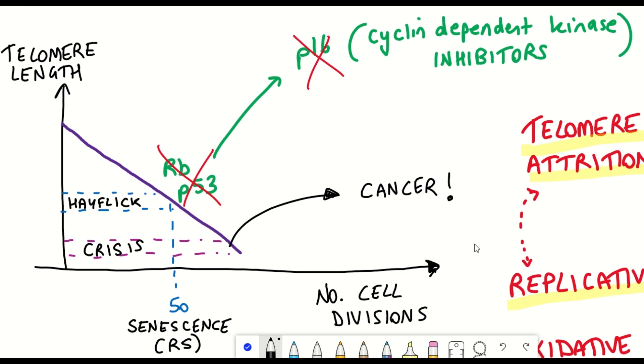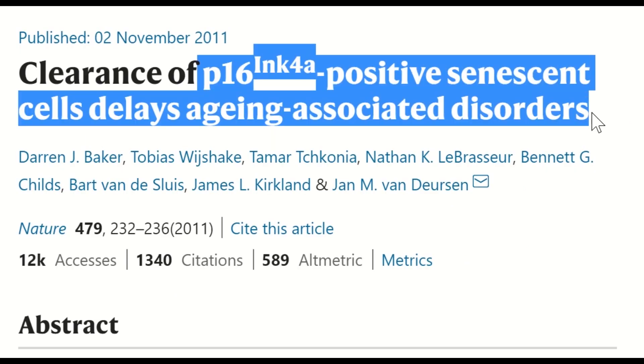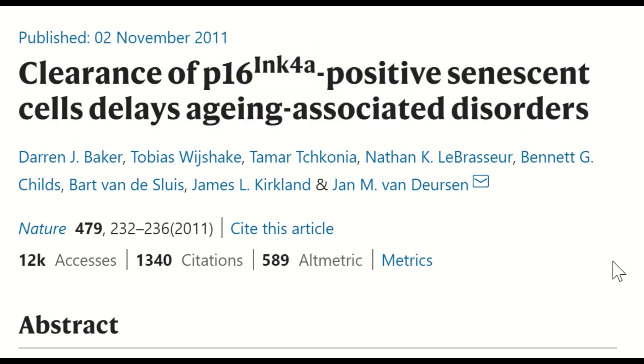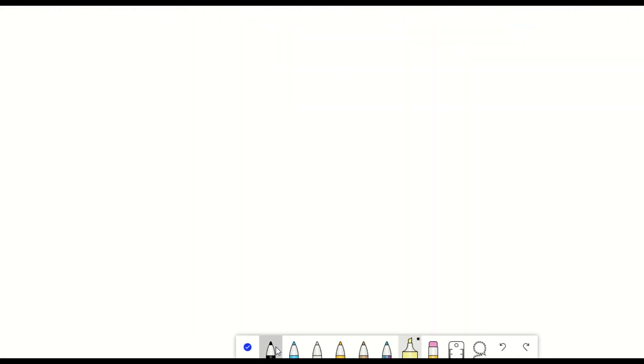So because of its function in preventing the cell cycle, P16 is commonly used as a marker of senescent cells. And interestingly, in studies whereby they've cleared cells expressing P16, so removing these senescent cells, they've delayed age-associated disorders in mice.